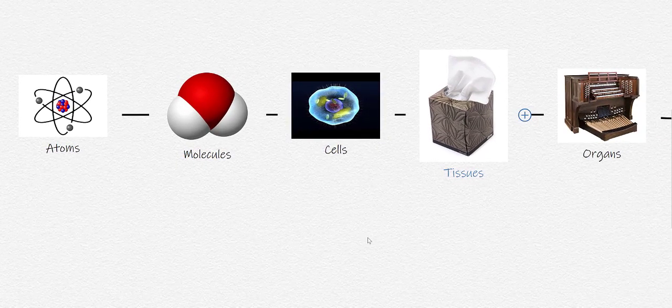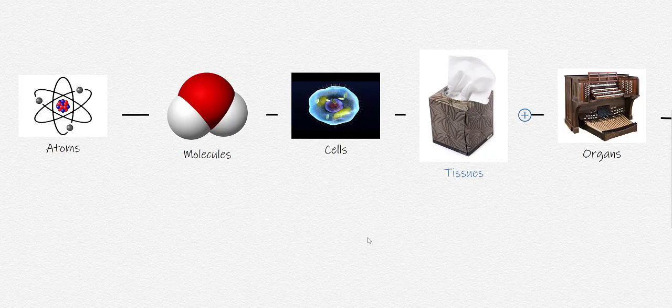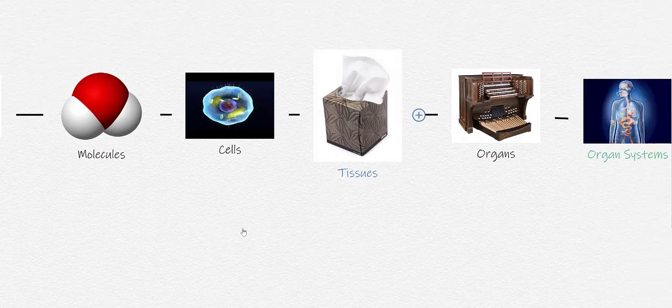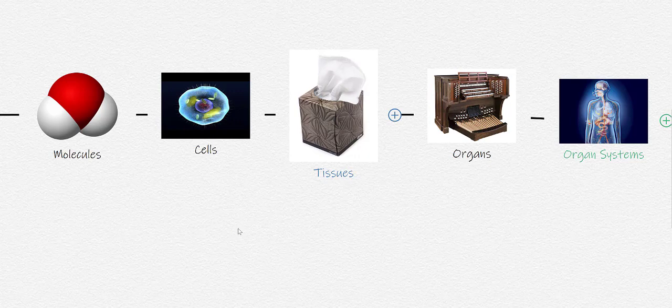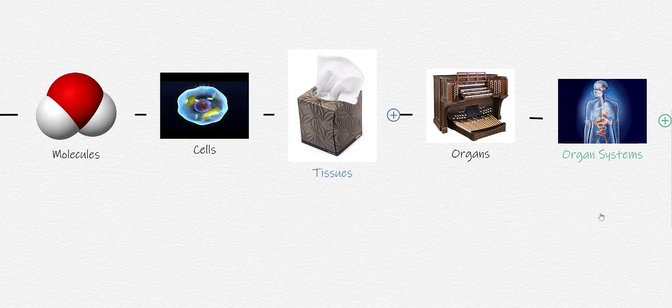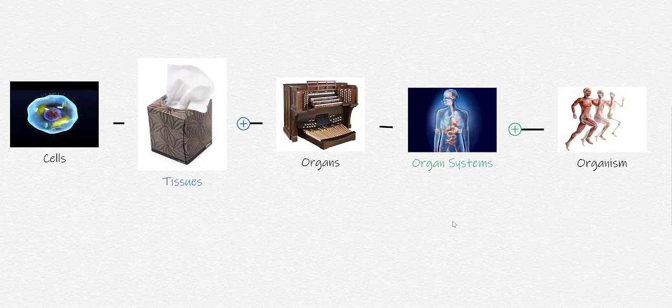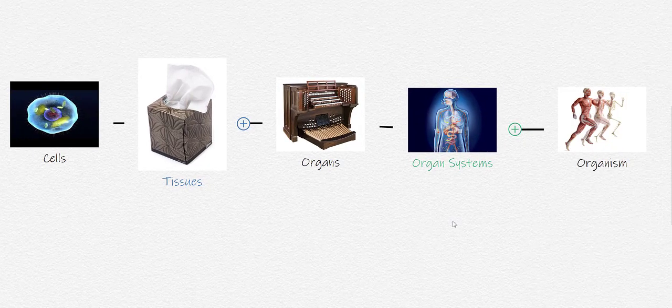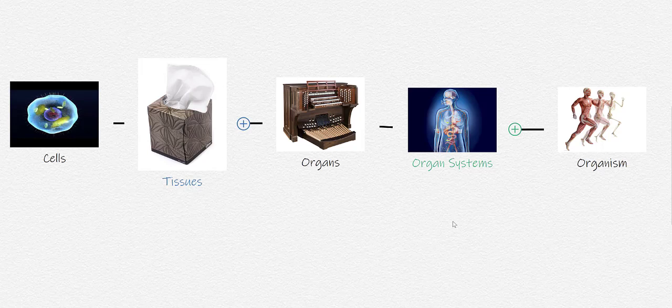Organs are comprised of two or more tissues that have a definite form and function. Organ systems will be groups of organs that work together to perform special functions. And those organ systems are housed together into a whole organism, such as a frog or a puppy or a human.